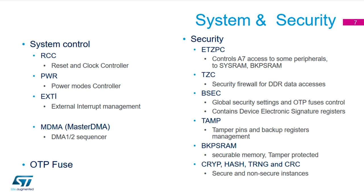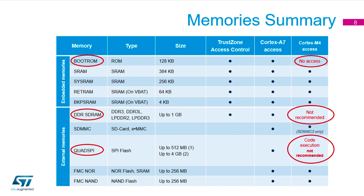Looking at the memory architecture: the boot ROM is factory-programmed by ST, hard-coded at 128K, and performs basic configuration in association with the boot pins. The SRAMs are segmented into different areas. The backup SRAM is 4K and can be maintained in low-power mode via a VBAT pin. The retention RAM is 64K and is primarily used for message buffers for inter-core communications between the M4 and the A7.